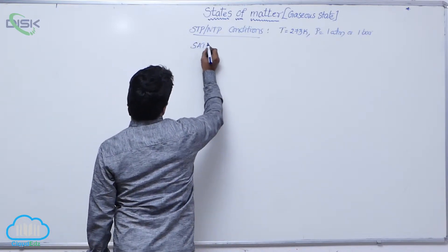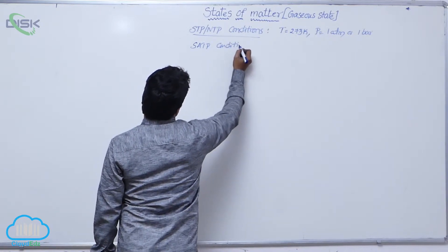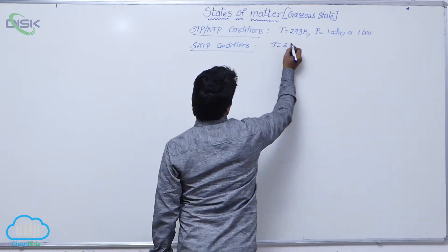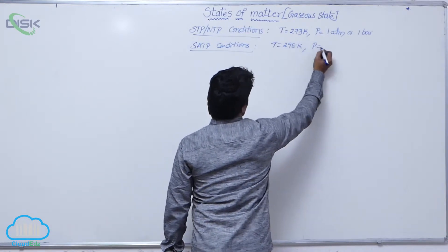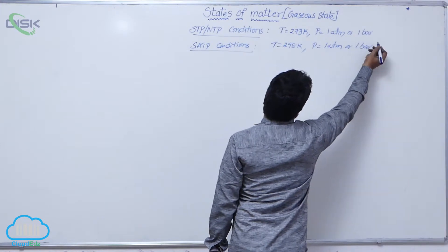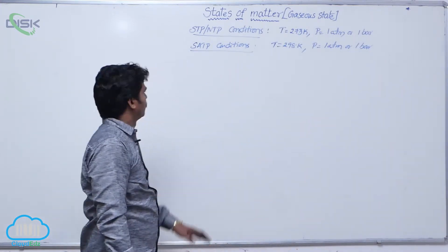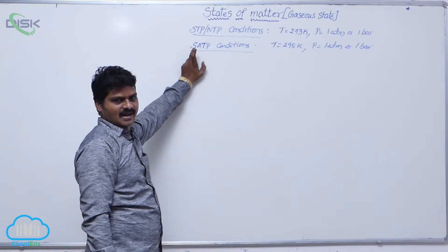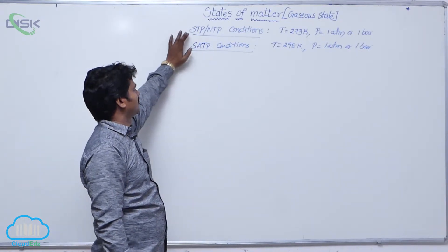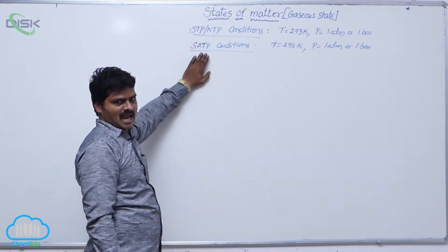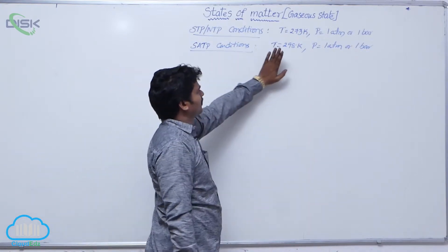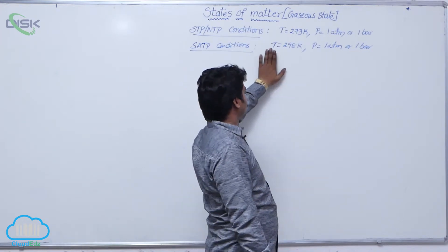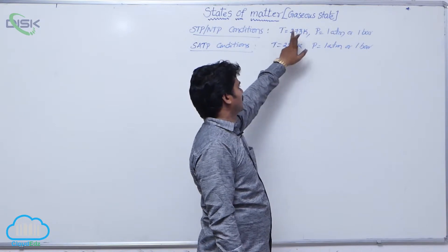There is another condition: SATP conditions. What are these conditions? Here temperature is 298 K, but pressure is 1 atmosphere or 1 bar. SATP means standard ambient temperature and pressure. In SATP, room temperature is taken — 298 K means 25 degrees centigrade, that means room temperature. But in STP, temperature is 273 K.